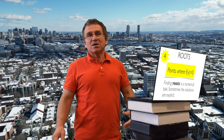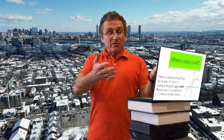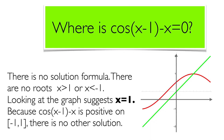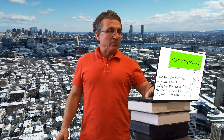Finding roots is another important topic. Sometimes we can only find them numerically or by guessing. It is also useful to find the intersection of different curves. For example, here we have cosine x minus one and x squared as two curves, and we want to find where they intersect — at least two roots.